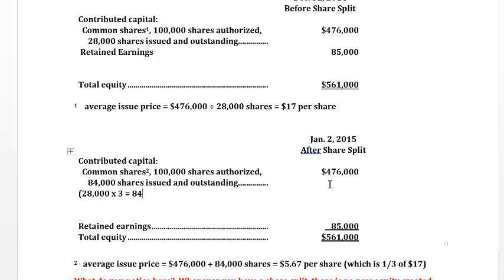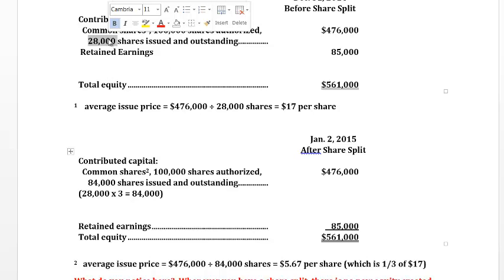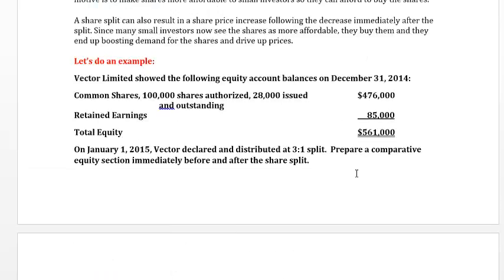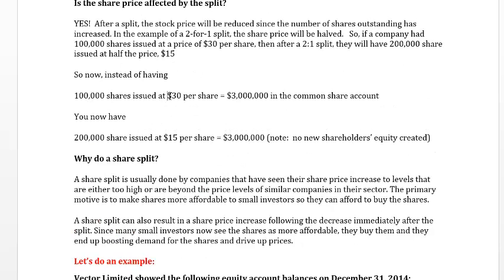So now we have 84,000 shares outstanding — that's 28,000 times 3. Whenever you're figuring out shares issued and outstanding after a split, you take the number of shares and multiply by the split ratio: three-for-one means multiply by three, two-for-one means multiply by two, five-for-one means multiply by five. Notice that there's no new equity created — same as a two-for-one split, you have more shares at a proportionally lower price, so no change in the common share account.